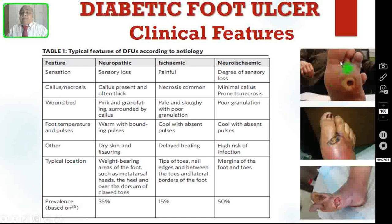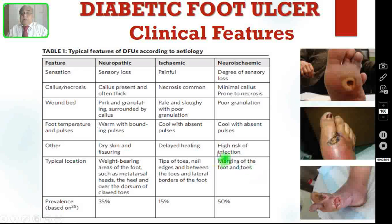Here you are seeing three pictures. The first picture is neuropathic — the ulcer is present over the plantar aspect of the foot, over the head of the metatarsal. The second shows the typical ischemic location: tip of the toes, nail or in between, over the dorsum of the foot — this is because of ischemia, loss of blood supply. The third is over the margins of the foot or toes — typical neuro-ischemic. The neuropathic ulcer is surrounded by callus, the ischemic is characterized by necrosis.